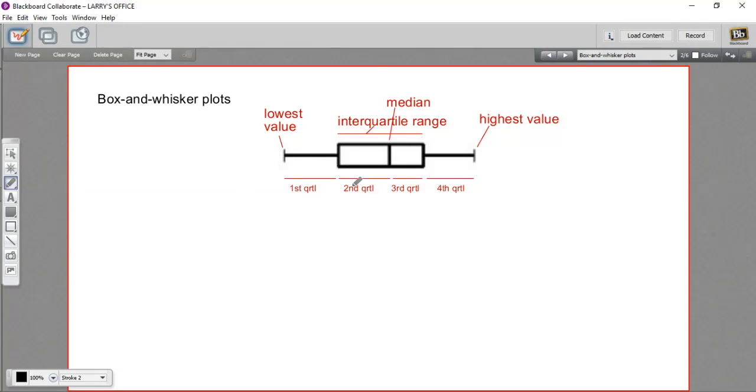So there's the first quartile, the second quartile, the third quartile, and the fourth quartile. And we draw the box in a box and whisker plot from the beginning of the second quartile to the end of the third quartile. And then the whiskers are the first quartile and the fourth quartile.